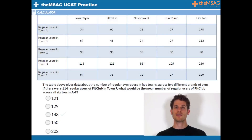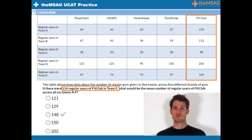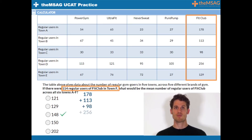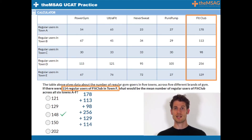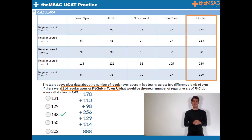For question 5, the answer is C. Adding 6 towns gives us 178 plus 113 plus 98 plus 256 plus 129 plus 114. This totals up at 888. 888 divided by 6 equals 148.